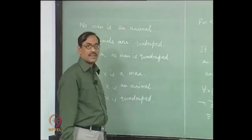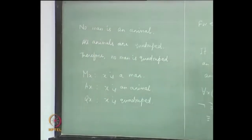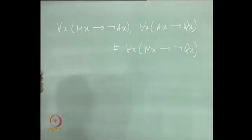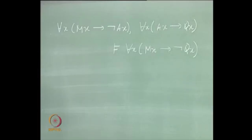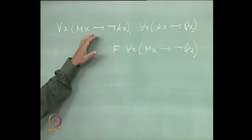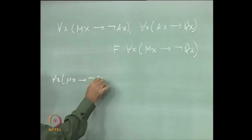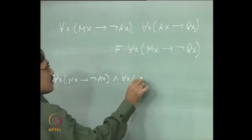Again, it is in the same form — the first form. We can write: for each X, if it is a man, then it is not quadruped. Suppose you want to prove this. We do not know whether it is valid or not. You can start with the AND of both the premises. Let us start with that: for each X, m(X) implies not A(X), and for each X, A(X) implies Q(X).